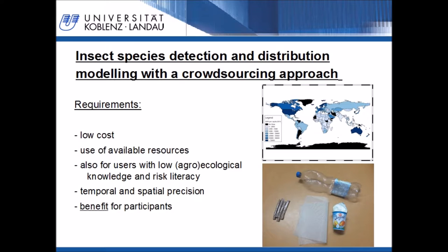In developing countries, most farmers have a low knowledge about agro-ecological relationships and also a low risk literacy. Therefore, such an approach should be constructed in a way that the farmers are not overstrained. In the described approach, farmers have to determine the species type of an insect. In the described framework, farmers have tools helping them in the determination of insect species, also usable by people with low literacy and with low ecological knowledge.